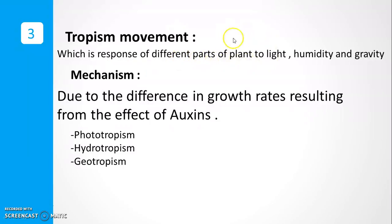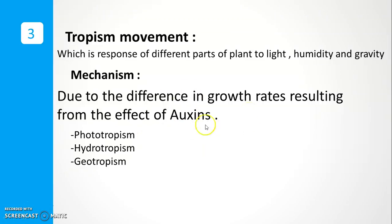Tropism movement is very important because it is a response in different parts of the plant caused by three elements: light, humidity, and gravity. These three stimuli are very important in exam questions. The mechanism of tropism involves auxins — auxins create a difference in growth rates, so it is the effect of auxins. Types of tropism include phototropism, hydrotropism, and geotropism.